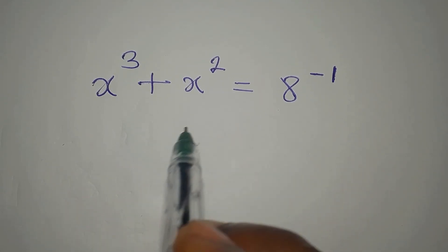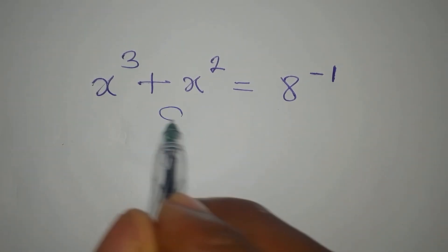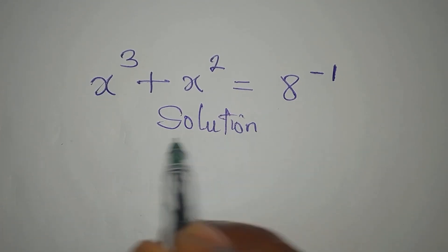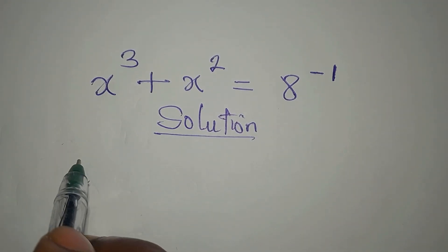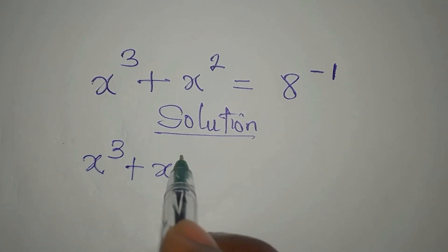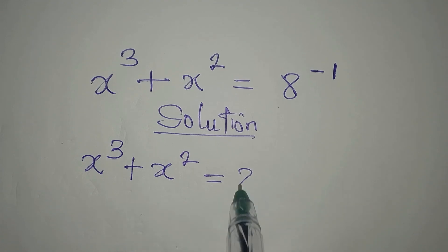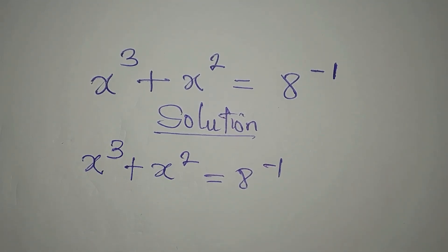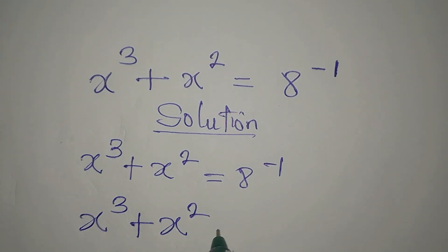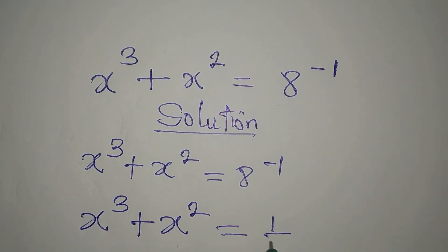Hi everyone. Let's provide the solution to this problem: x to the power of 3 plus x to the power of 2 equals 8 to the power of negative 1. This is x cubed plus x squared equals 1 over 8, according to one of the laws of indices.